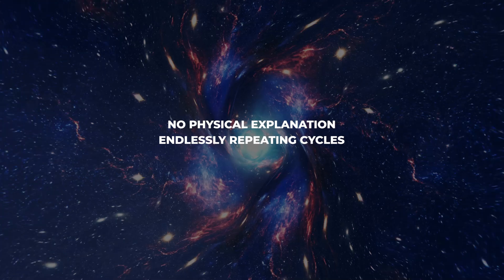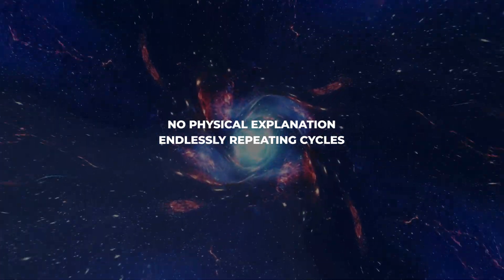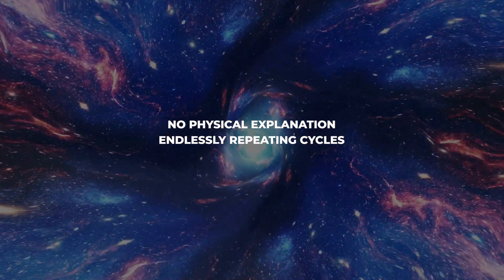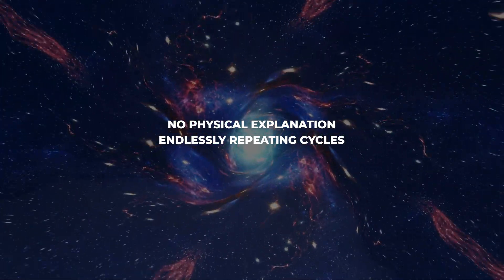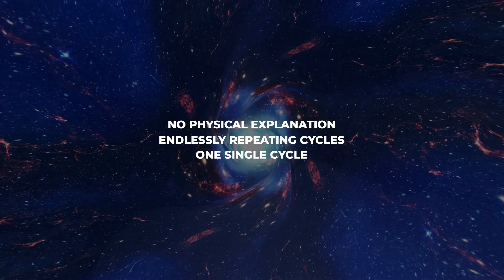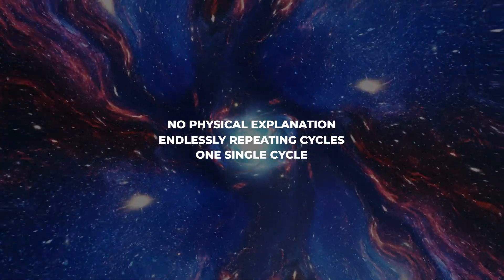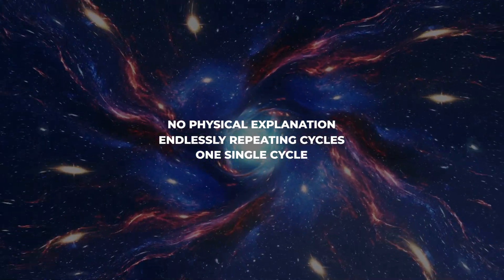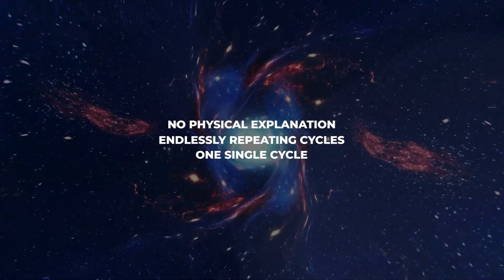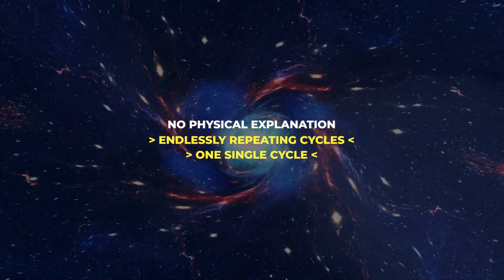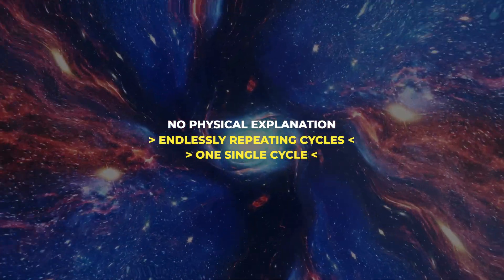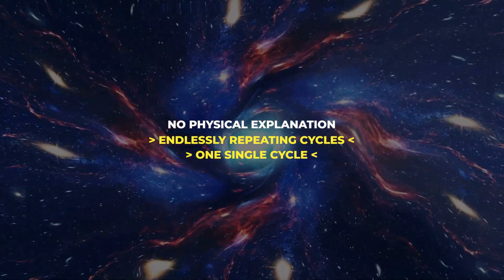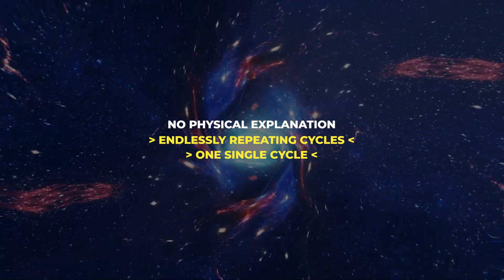Or there could be endlessly repeating cycles, each a universe in its own right, with the initial quantum state of each universe explained by some feature of the universe before. Or there could be one single cycle, and one single repeating universe, with the beginning of that cycle explained by some feature of its own end. The latter two approaches avoid the need for any uncaused events, and this gives them a distinctive appeal. Nothing would be left unexplained by physics.